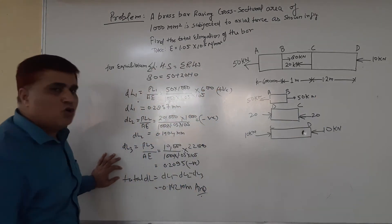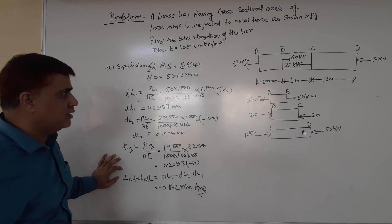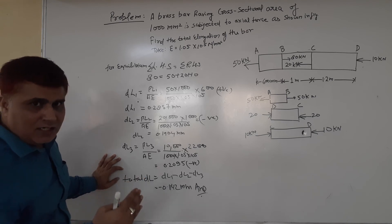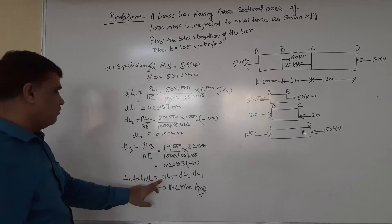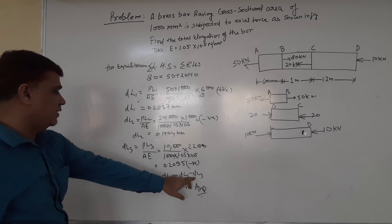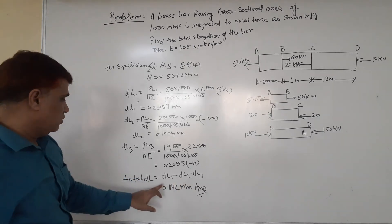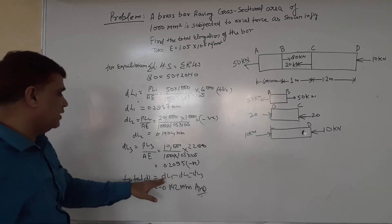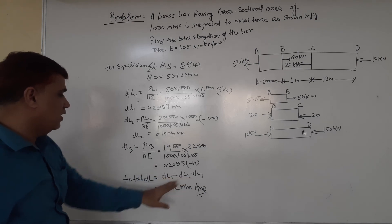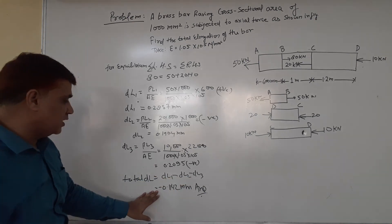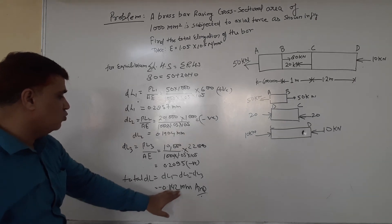Now we get the total elongation by taking the summation of all sections: ΔL₁ - ΔL₂ - ΔL₃. We're considering the negative because these two sections are compressive. Putting the values of ΔL₁, ΔL₂, and ΔL₃, we get the final total elongation of -0.1142 mm.